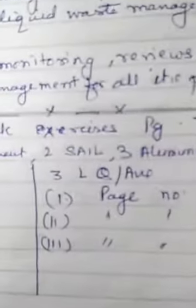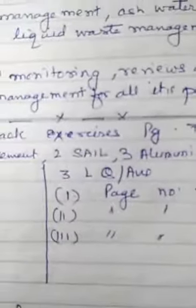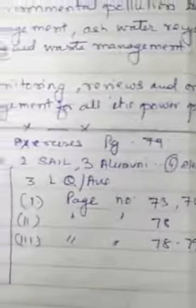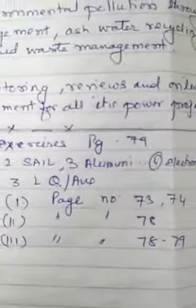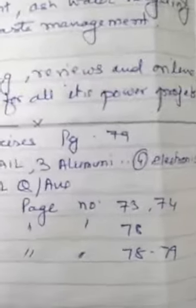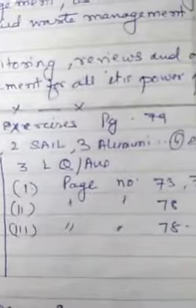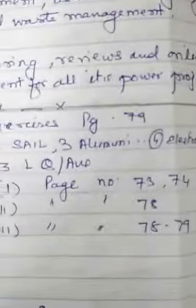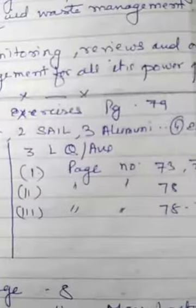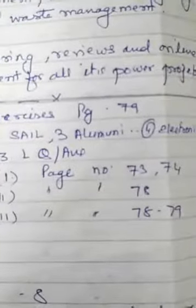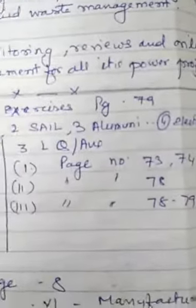Third part, long question answers: first question is on pages 73 and 74, second question is on page 78, third question is on pages 78 and 79.